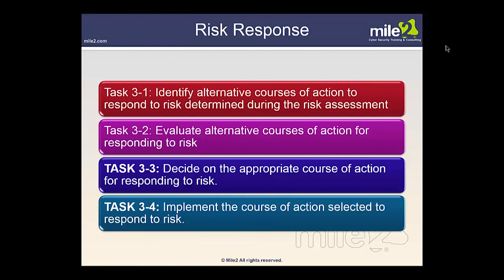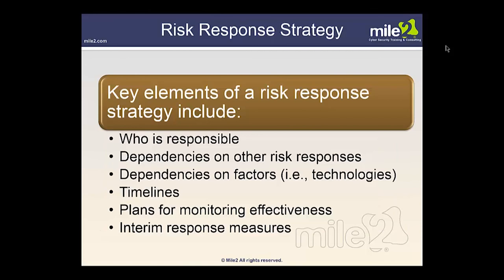Risk response tasks: Task 3-1 — identify alternative courses of action; Task 3-2 — evaluate the alternative courses of action; Task 3-3 — decide on the appropriate course of action; Task 3-4 — implement the selected course of action. Summarized: risk response identification, evaluation of alternatives, risk response decision, and risk response implementation. Key elements of a risk response strategy include who is responsible, dependencies on other risk responses, dependencies on technologies, timelines, plans for monitoring effectiveness, and interim response measures.